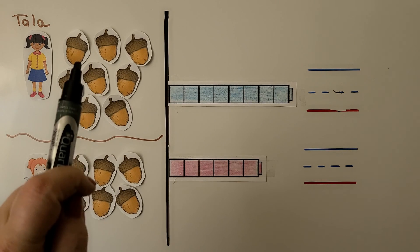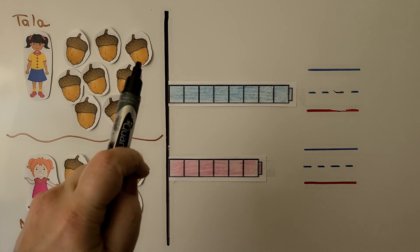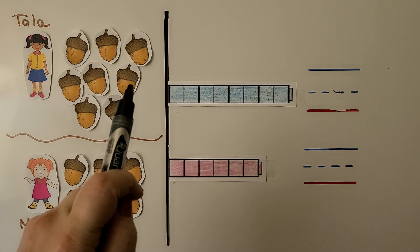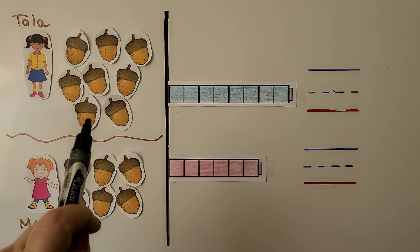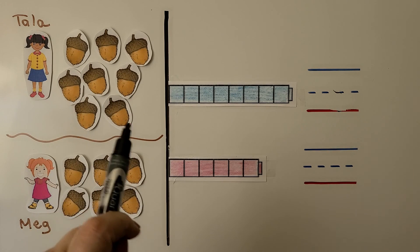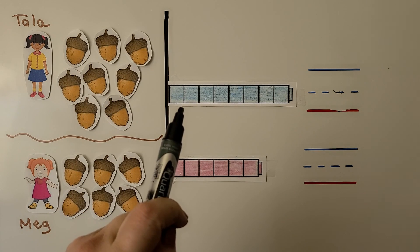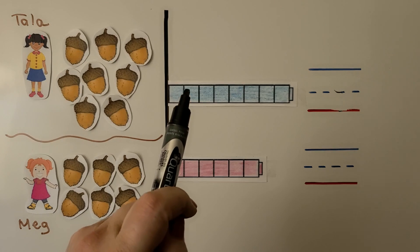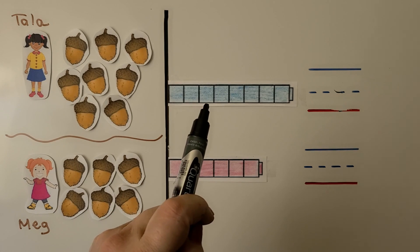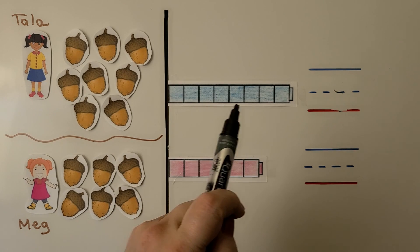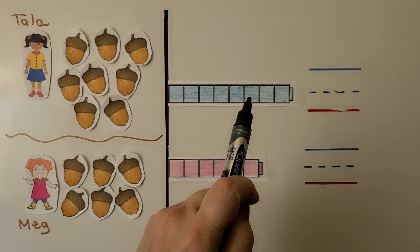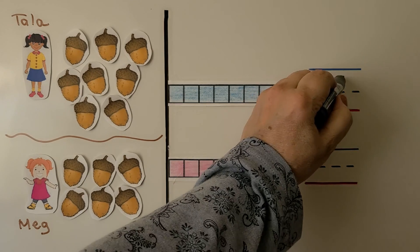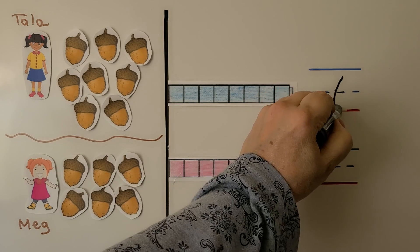We can color cubes in a cube train. Tala has one, two, three, four, five, six, seven, eight. We color eight cubes for a cube train — one, two, three, four, five, six, seven, eight. We can write the number eight.